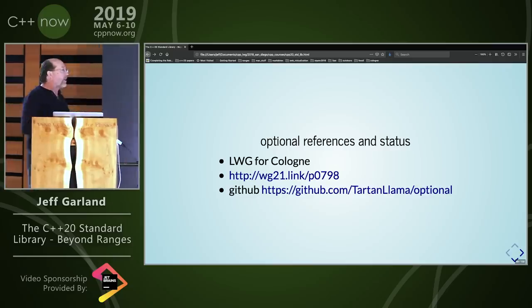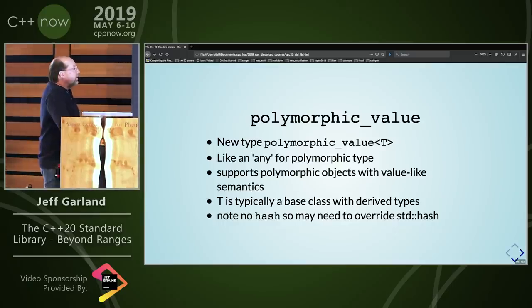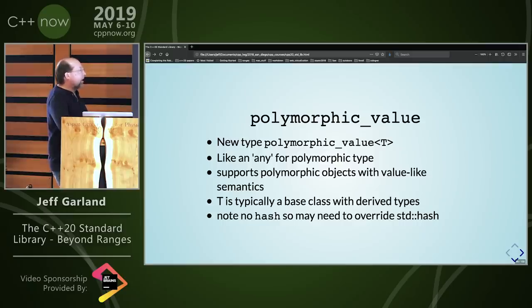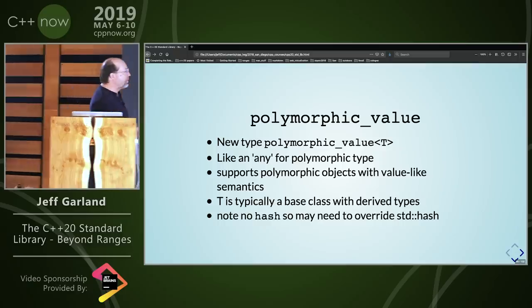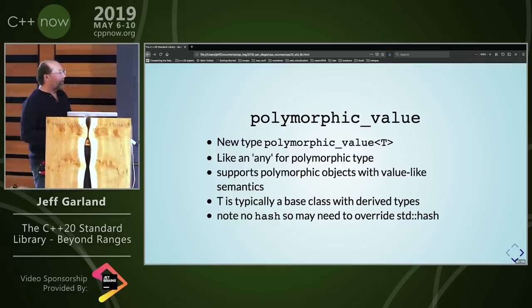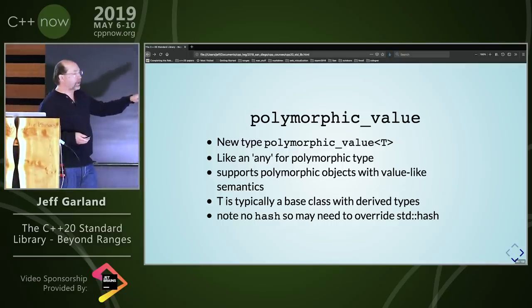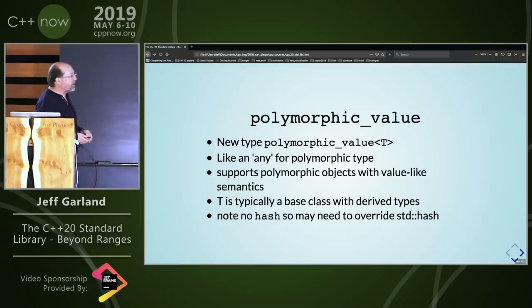This is library working group for Cologne. Polymorphic value: for object-oriented programmers, this is an interesting type — I highly encourage you to read this paper, coauthored in part by Sean Parent. It's kind of like an any for polymorphic types, but really what we're trying to do is create a polymorphic object with value type or regular semantics. You'll typically have a base class and derived types you plug in. One thing to note: there's no standard hash for this, so if you're going to use polymorphic objects with hash containers, you'll need to write your own hash.